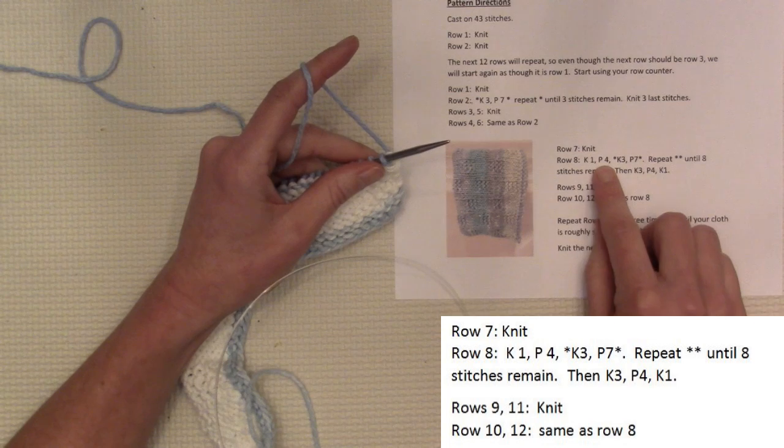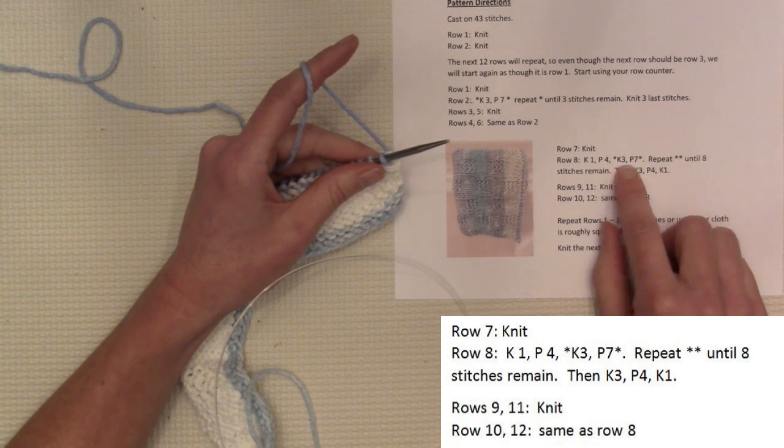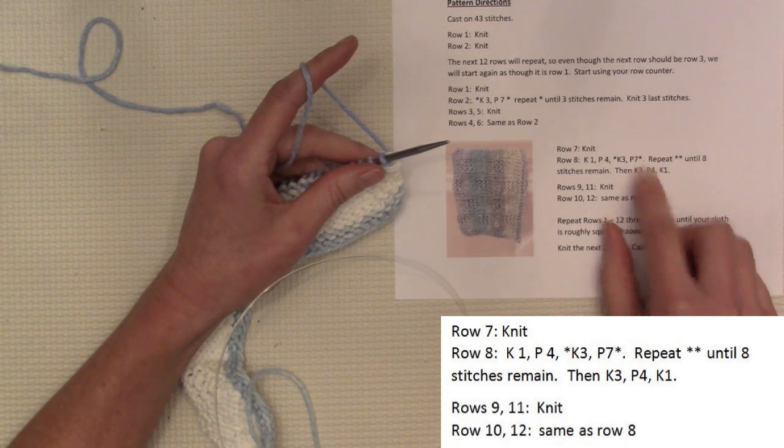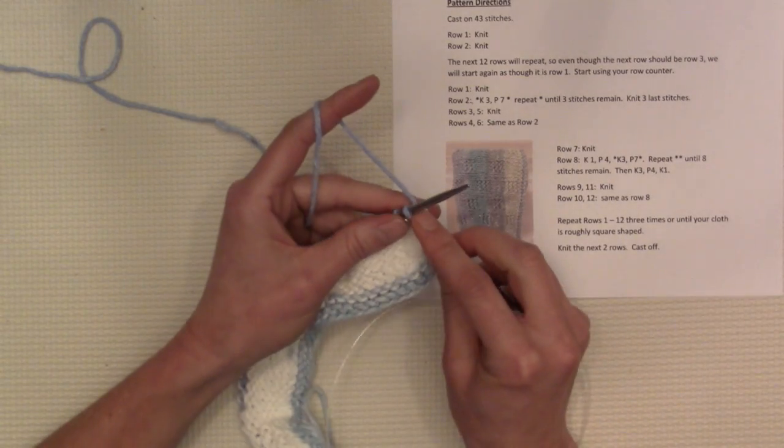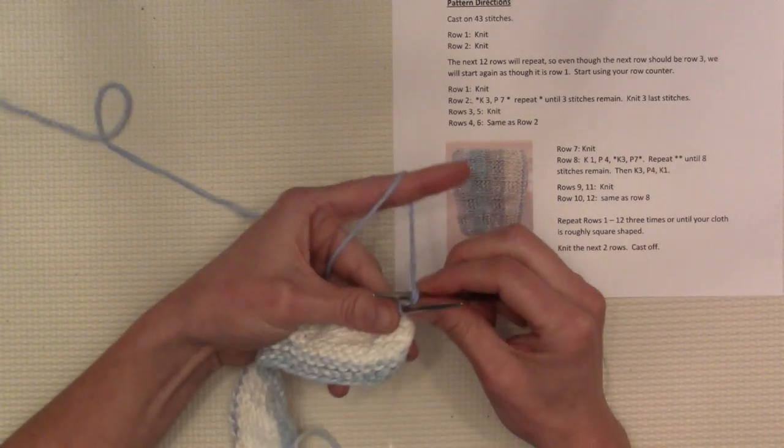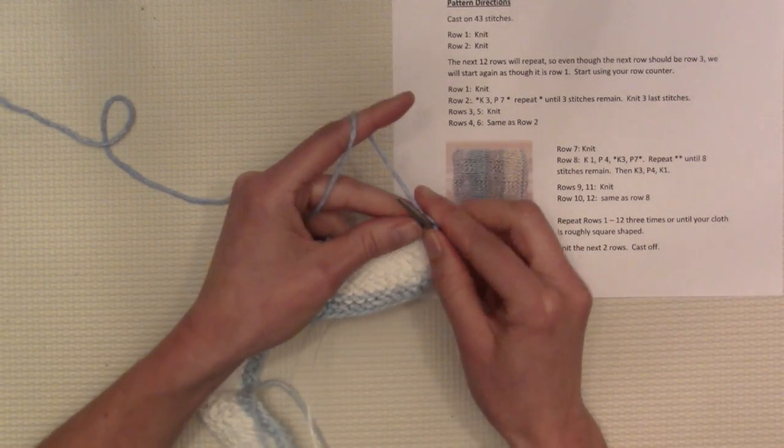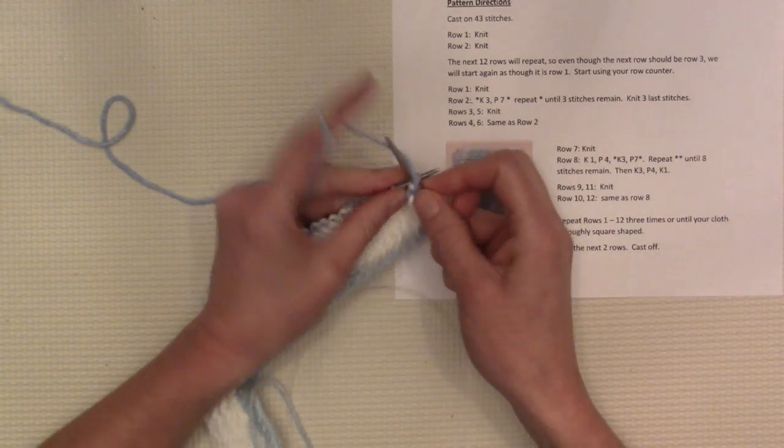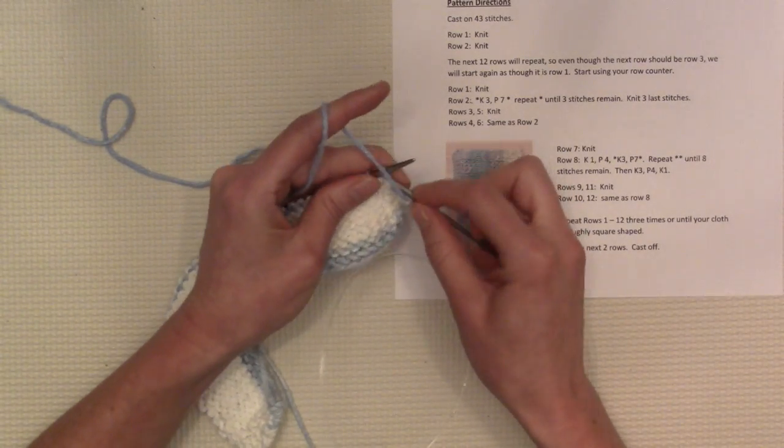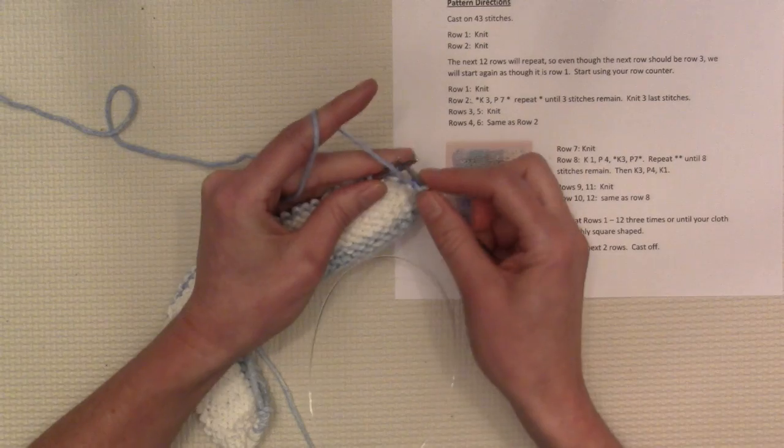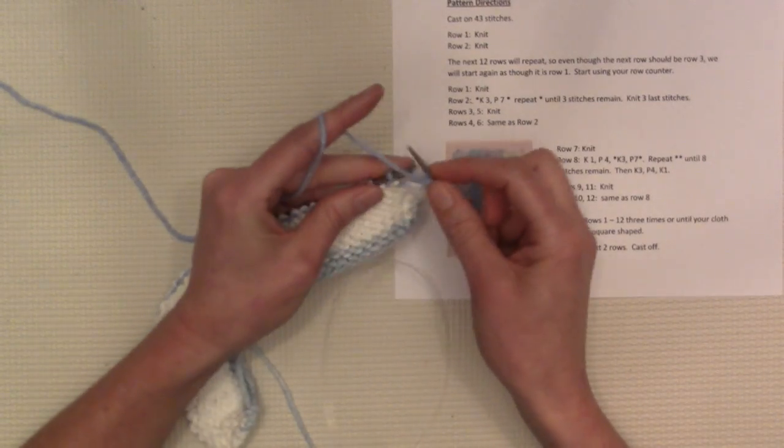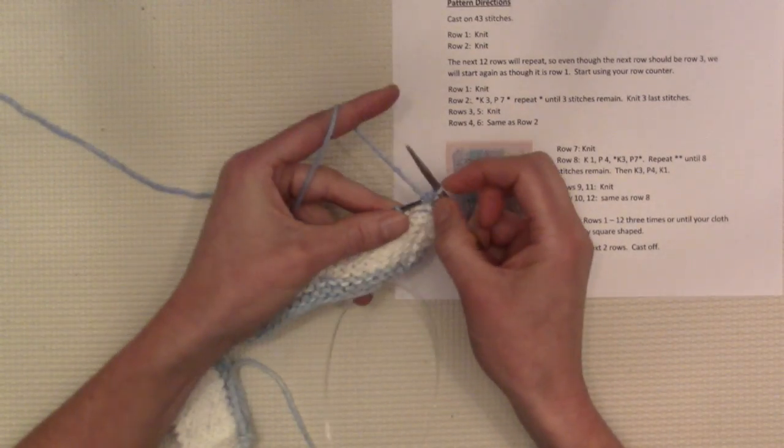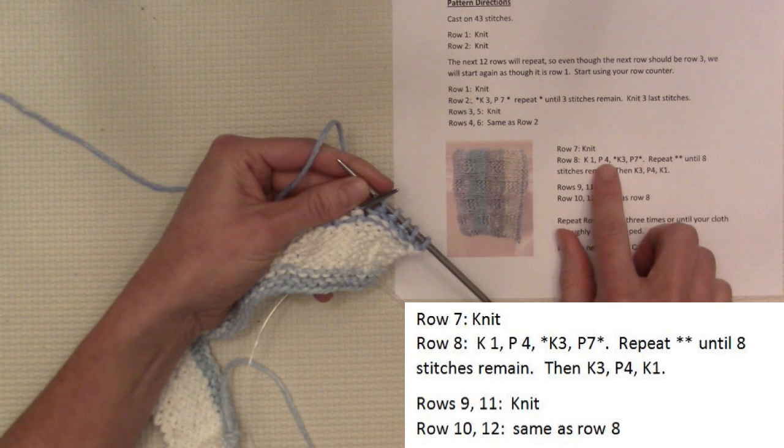You're going to knit 1, purl 4, and then you do this repeating bit between the asterisks. So let's start with that much. You're going to knit 1, then you're going to purl 4: purl 1, purl 2, purl 3, purl 4. Brilliant. Knit 1, purl 4.